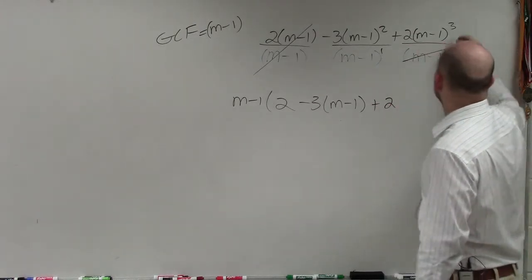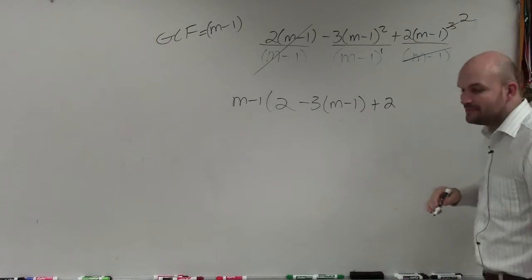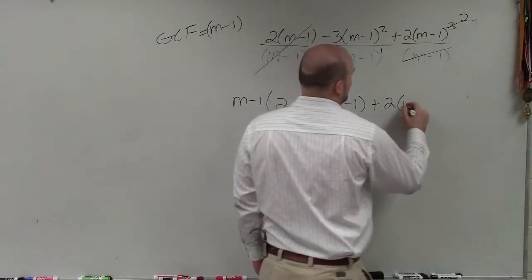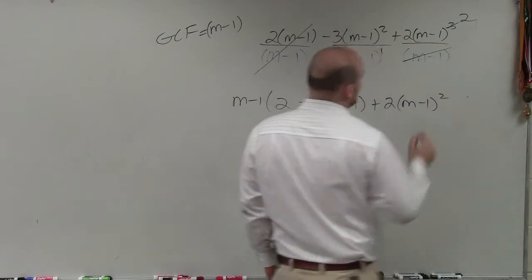And then plus 2. m minus 1 cubed divided by m minus 1 is going to leave you with m minus 1 squared.